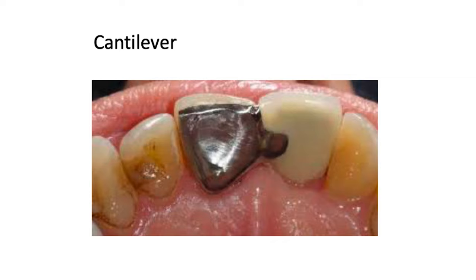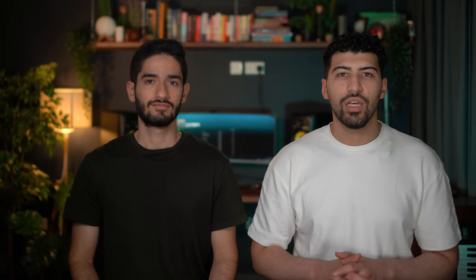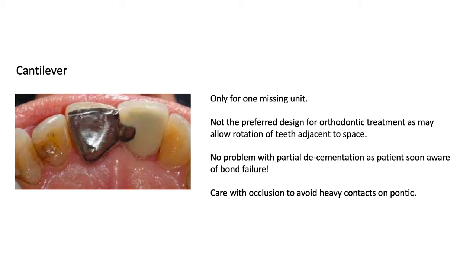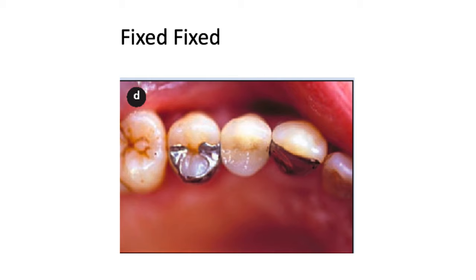Starting with the cantilever — these are good when you have one missing tooth and want to replace the gap. They also have a reduced risk of secondary caries compared to a fixed-fixed design. If one winged retainer debonds, the bridge will just come out. In terms of survival rates, cantilevers last about 10 years and fixed-fixed bridges about eight. With a fixed-fixed design, if one retainer debonds, the other wing keeps the bridge in place, allowing food and plaque to build up under the debonded wing and cause secondary caries.